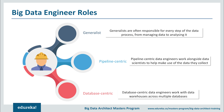There are typically three kinds of roles that a big data engineer has to assume. First of all, we have the generalist. Generalists are typically found on small teams or in small companies. In this setting, data engineers wear many hats as one of the few data-focused people in a company. Generalists are often responsible for each step of the data process, from managing data to analyzing it.